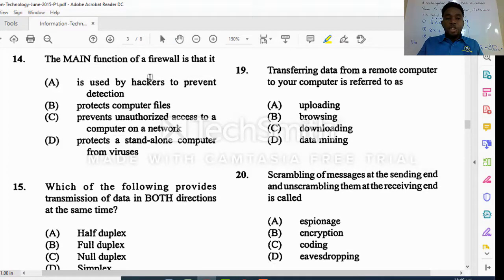The main function of a firewall is that it does what. The firewall is going to do what. Used by hackers to prevent detection? No. Protects computer files? Yes, but not in that way. Prevents unauthorized access to a computer on a network. This would be more of the obvious answer. You must be on a network for your firewall to function or carry out its function. So it is going to prevent unauthorized access to a computer on a network. We look at C for this one.